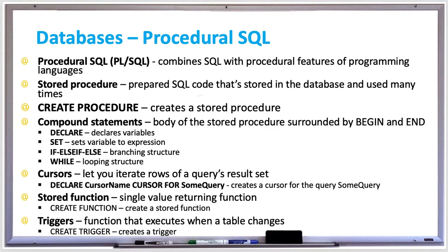Arguments are the actual data passed to the parameters of a stored procedure. Arguments can be literals, which are actual data values, or you can pass user-defined variables as arguments — but variable names must begin with the @ character. You can call a stored procedure from a programming language like Java or Python, on the command line, or from another stored procedure using the CALL keyword.